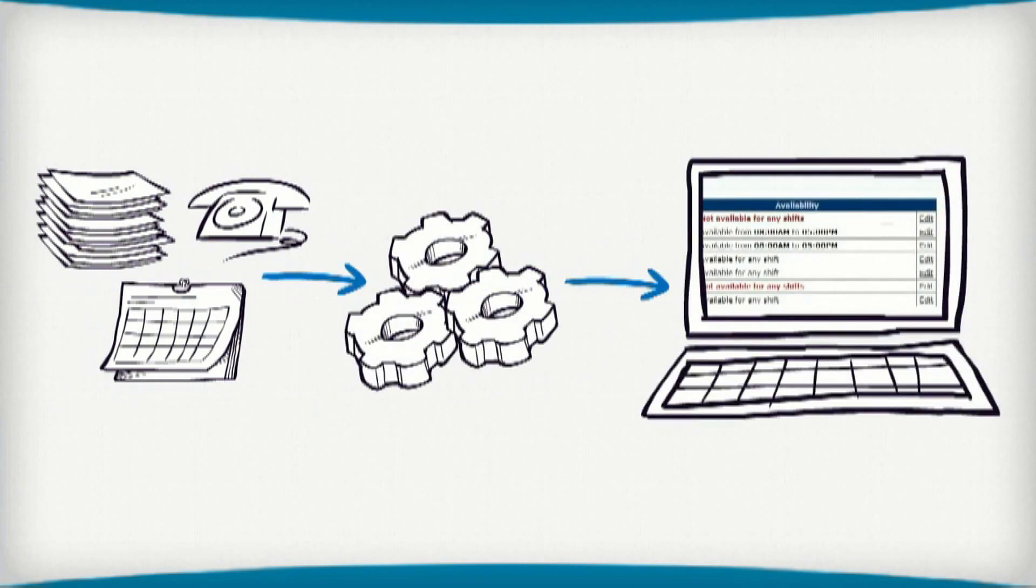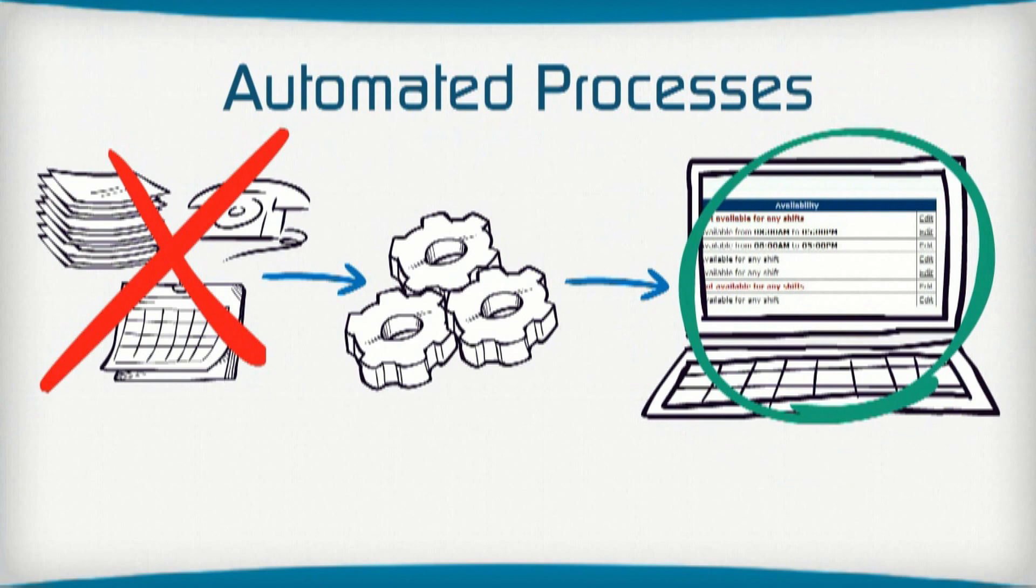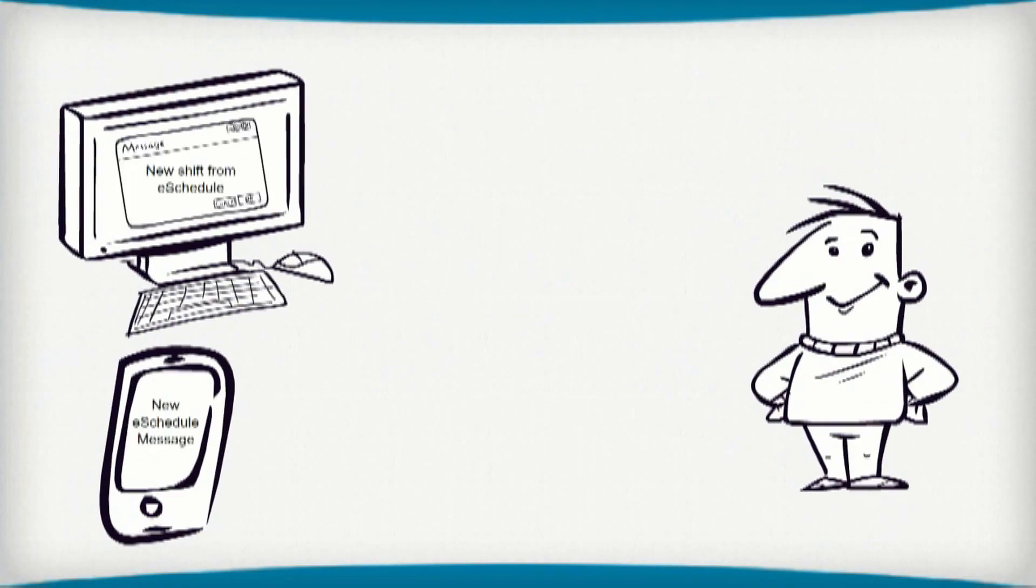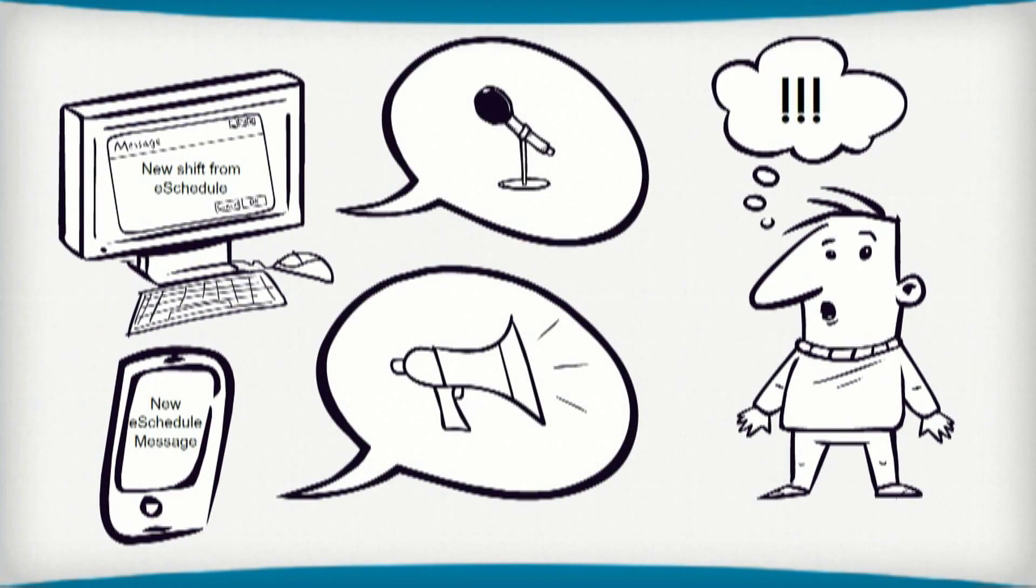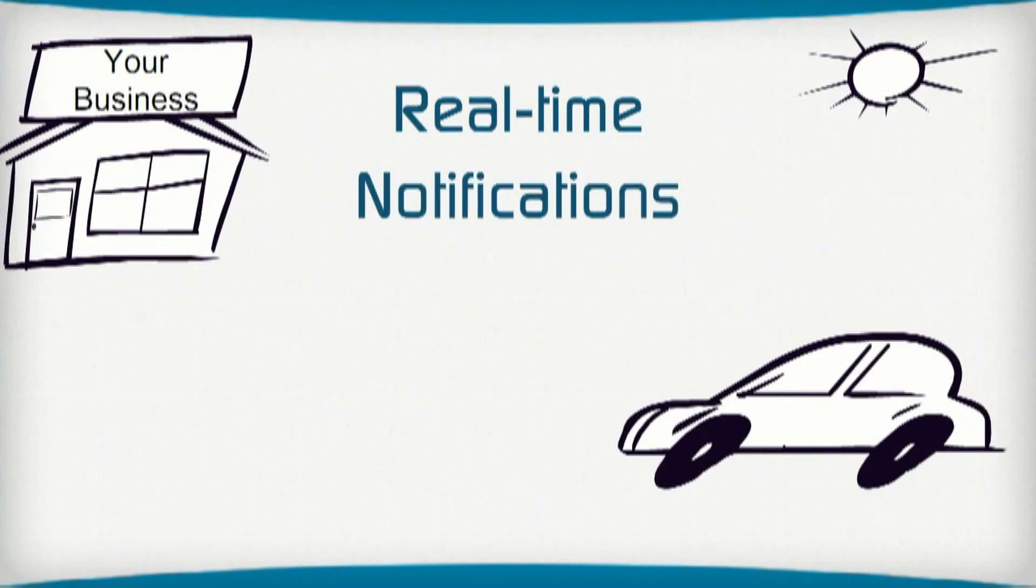Automated scheduling will quickly fill open shifts, track time off, and handle shift trades. E-Schedule ensures employees are always up to date through automatic schedule notifications and shift reminders, eliminating excuses for missing a shift.